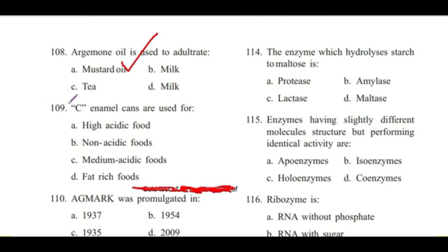Question 109: C-enamel cans are used for — high acidic foods, non-acidic foods, medium acidic foods, or fat-rich foods? Answer is B, non-acidic foods. Lacquers are of two types: acid-resistant and sulfur-resistant. Sulfur-resistant lacquer is known as C-enamel or SR cans.